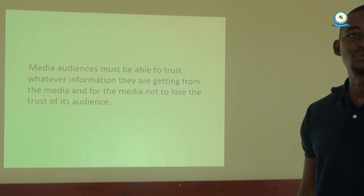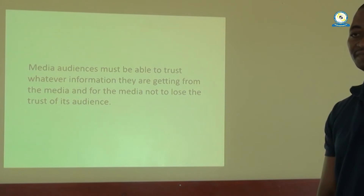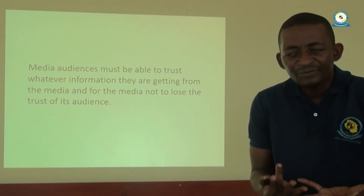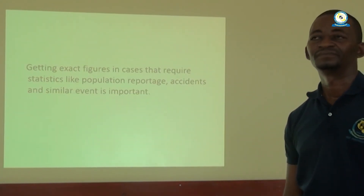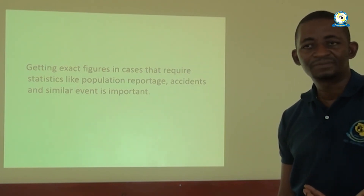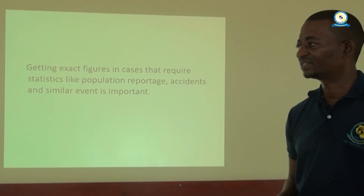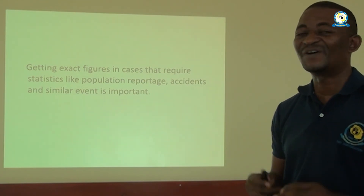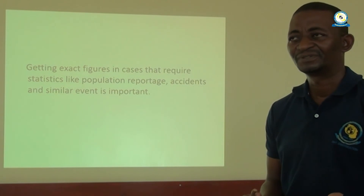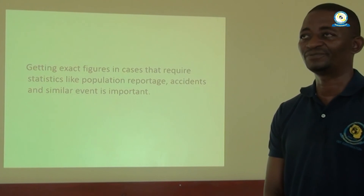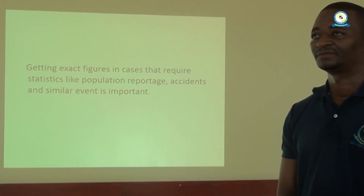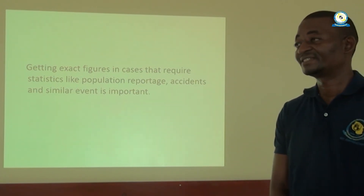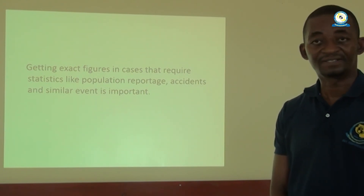As a media practitioner, you must go the extra mile in checking the correctness of information derived from sources and interviewees. You have to get exact figures in cases that require statistics — like population, reported accidents, and similar events. If your story involves statistics, make sure you get validated statistics from authoritative figures. In Tanzania, for example, we have the chief government statisticians from the Tanzania Bureau of Statistics. You don't just get statistics anyhow; you don't fabricate statistics — that is against the law in Tanzania, if you refer to the Statistics Act 2015.